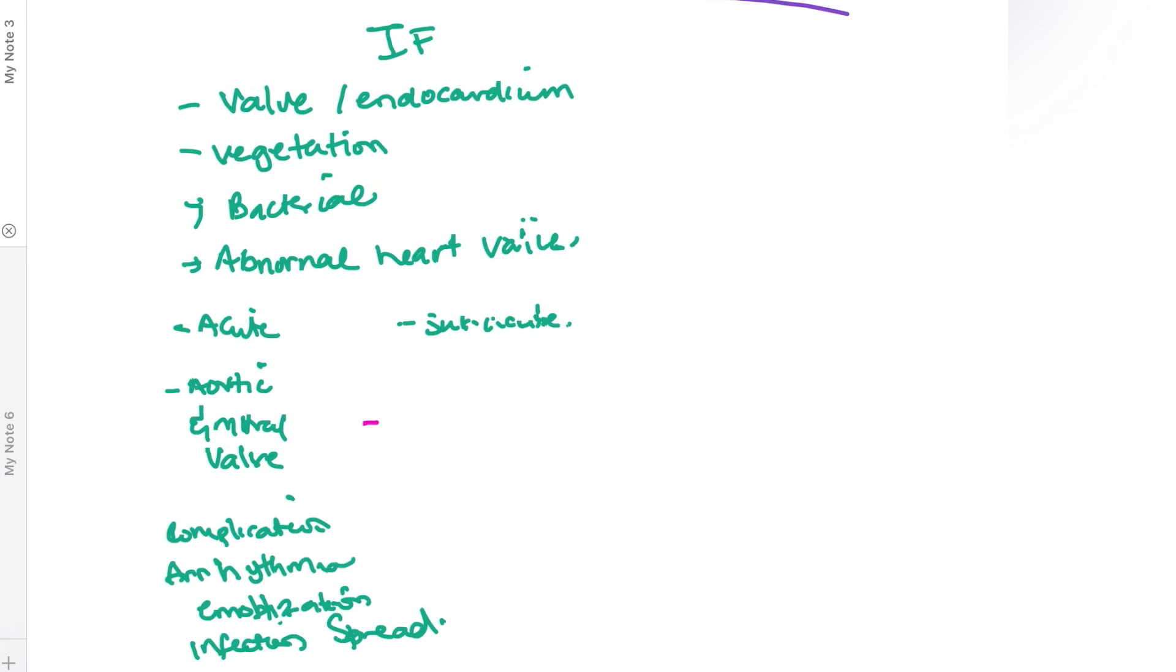Similarly to rheumatic heart disease, it mostly occurs in your mitral and aortic valves. However, in IV drug users, it usually occurs in your tricuspid valve. You have these vegetations which are basically fibrin, fibrosis, and necrotic tissues. There's inflammation with cytokines being released, macrophages, et cetera.